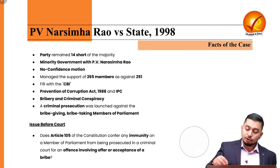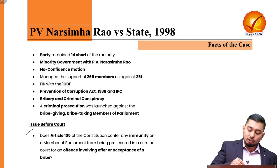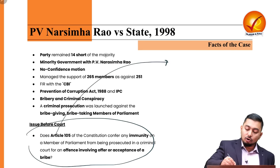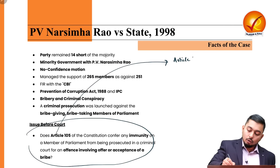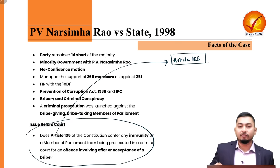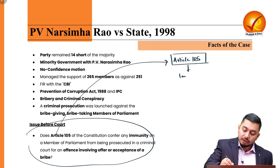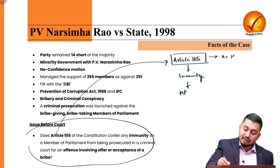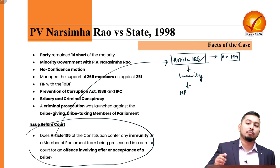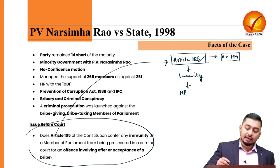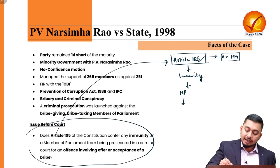The idea was that bribery was involved to buy legislators and defeat the no-confidence motion. This issue went before the Supreme Court, which had to decide whether Article 105 of the Indian Constitution and Article 194 would grant immunity to a Member of Parliament or Member of Legislative Assembly who was involved in any crime while exercising their right to vote or speech.